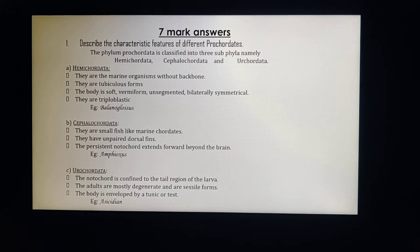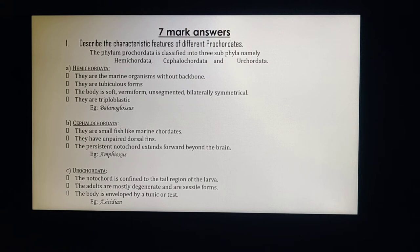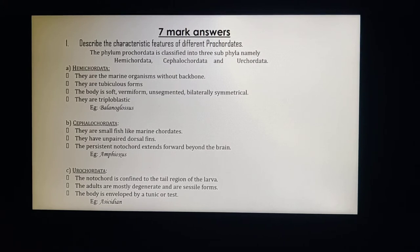Hemicordata characteristics: they are marine organisms without a backbone, example Balanoglossus. They are tubiculus forms — the organism looks like a tube. The body is soft and vermiform, meaning it appears like a worm. The body is unsegmented, bilaterally symmetrical, and they are triploblastic animals consisting of ectoderm, mesoderm, and endoderm.